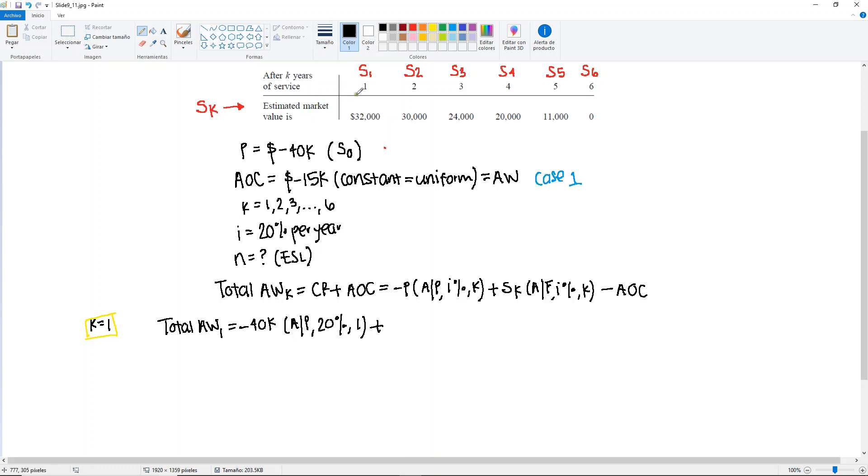Plus the salvage in year 1, 32,000. Find A given F at 20% for 1 year. Minus the annual operating cost. And if you go ahead and solve this, you will get minus 31,000. So you have your first answer there.